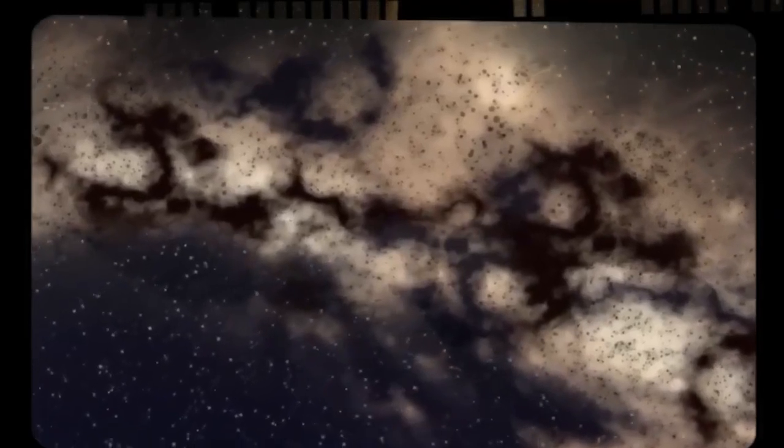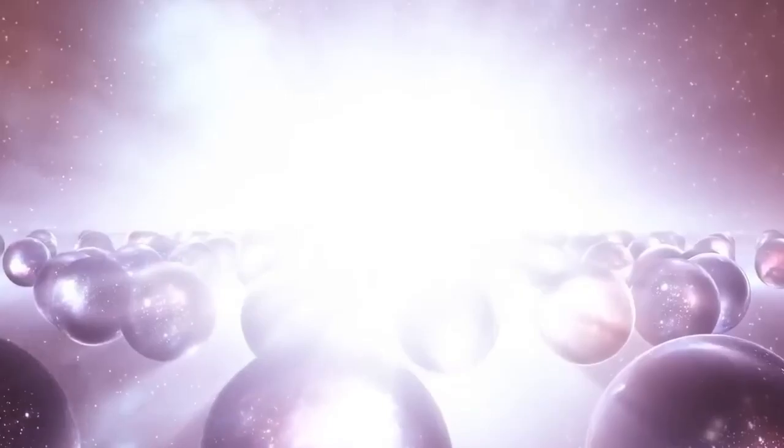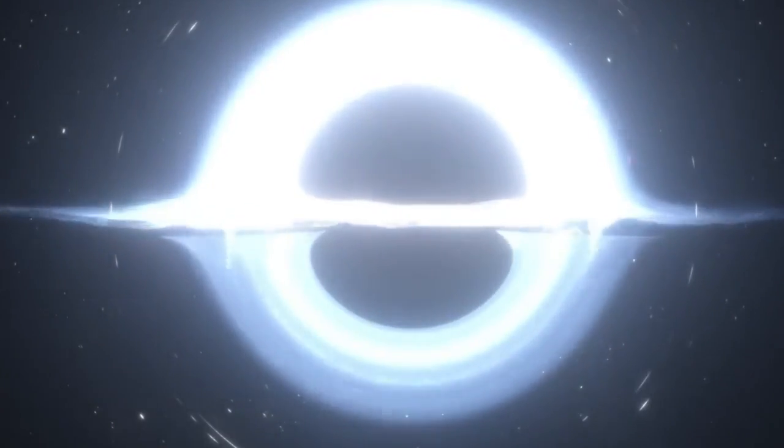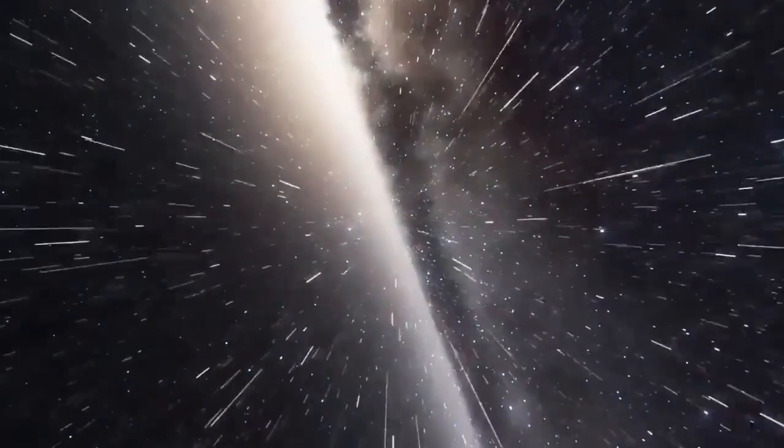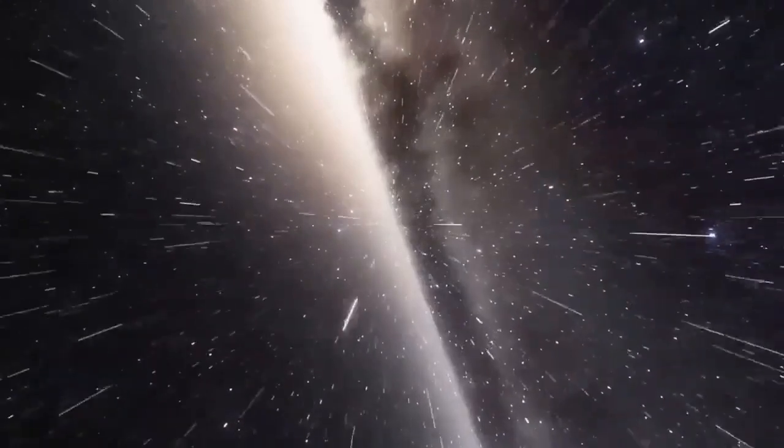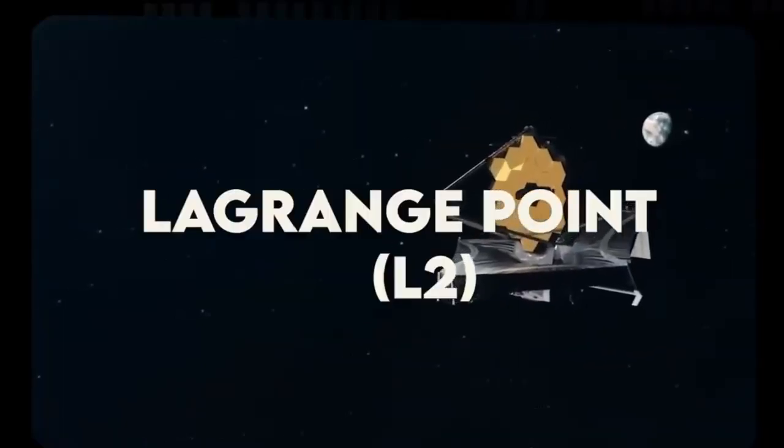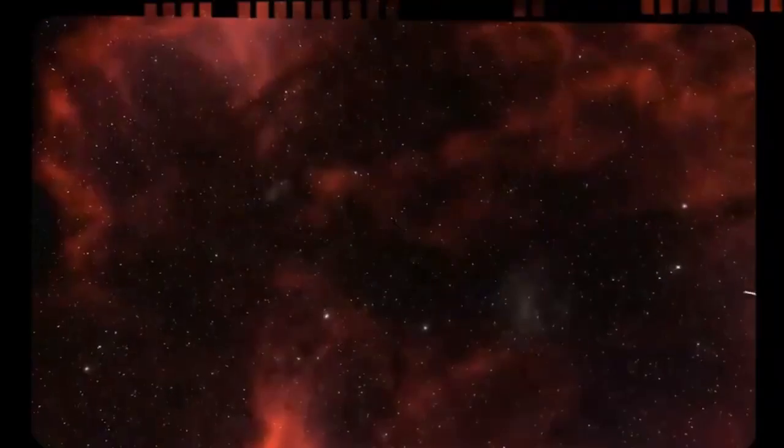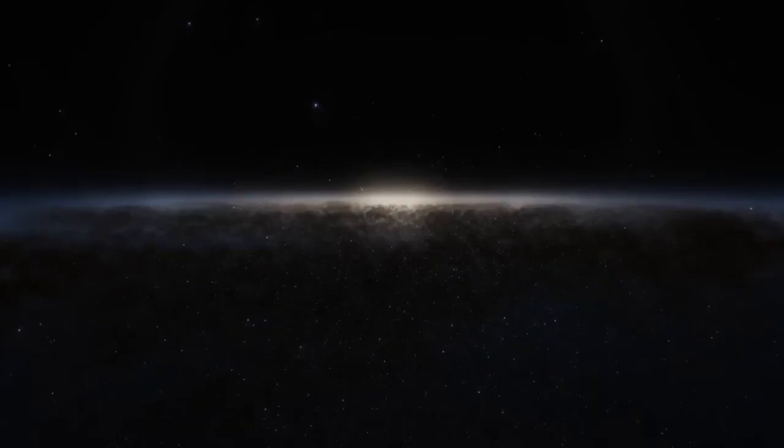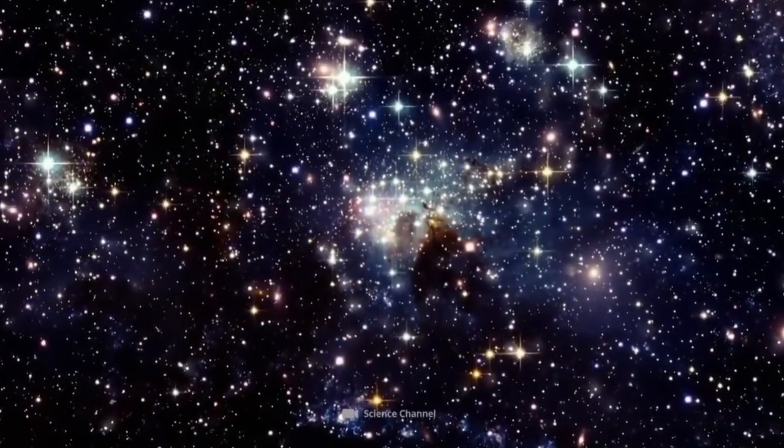Next, the flatness problem. In an expanding universe in general, there's a fight between the initial expansion rate that drives things apart and the gravitational effects that work to bring everything back together. In our universe, we observe that these two opposing forces are pretty much perfectly exactly balanced, leading to an exactly spatially flat universe. So why was our universe born with those properties?